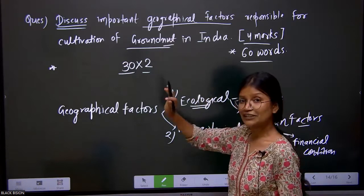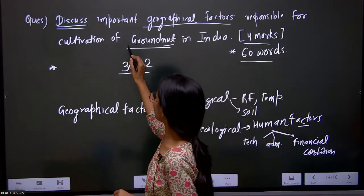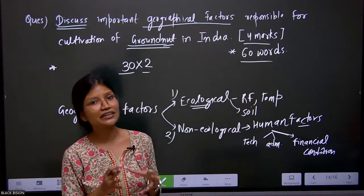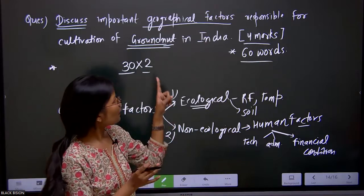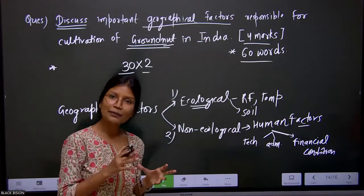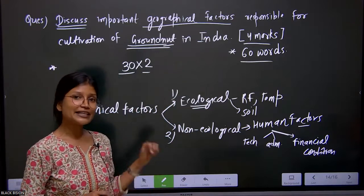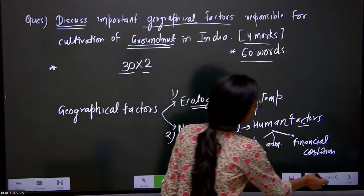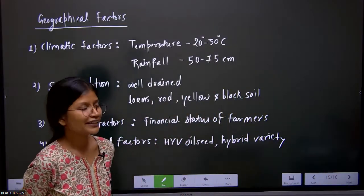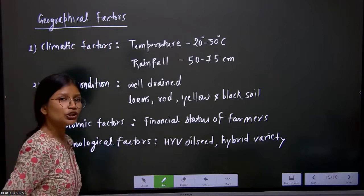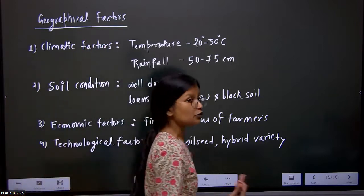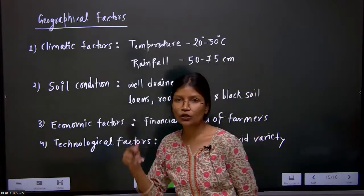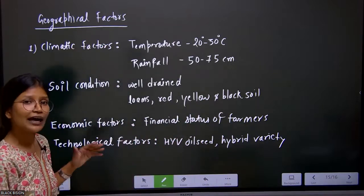Groundnut is the most important oil seed — in fact, India is the second largest grower in the world, contributing nearly 70% of world production. We have nine major oil seeds in India, and among those nine, groundnut is number one — the most important oil seed in India. Now let us frame the answer. The geographical factors — or ecological factors — which comprise climatic and soil conditions are the major ones affecting groundnut production in India.